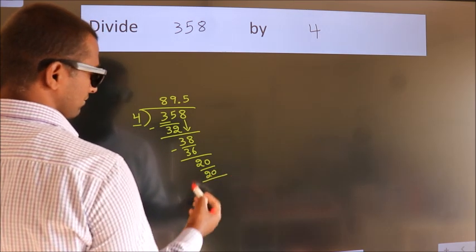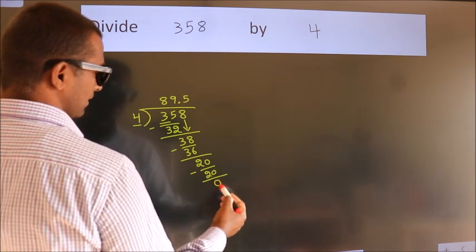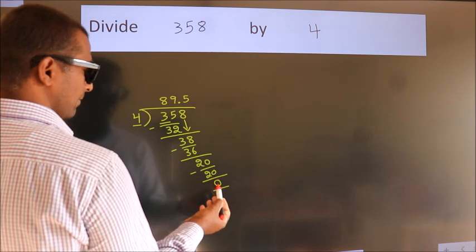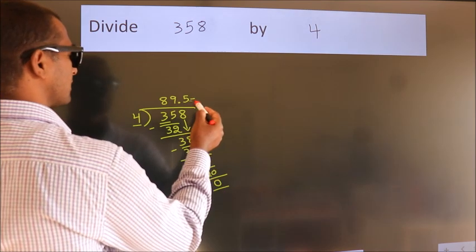Now we subtract. We get 0. We got remainder 0, so this is our quotient.